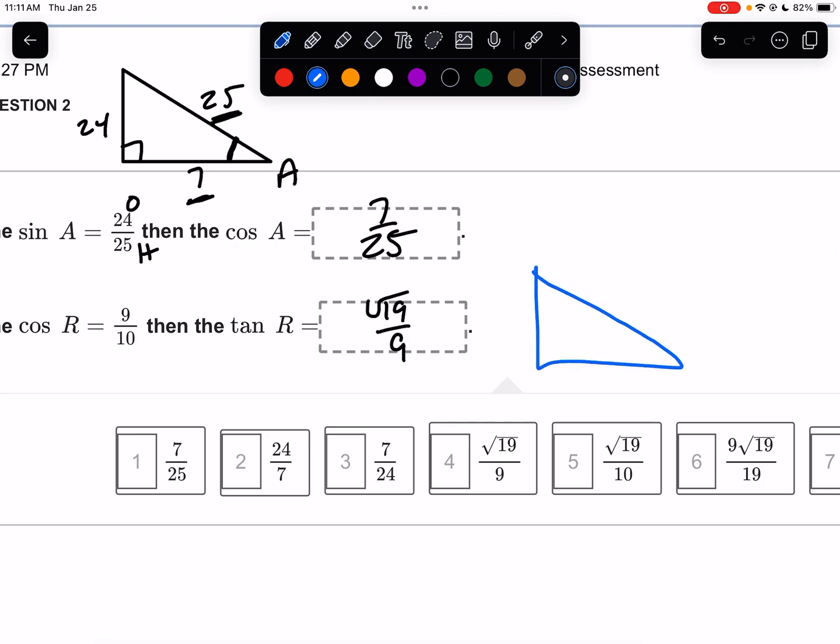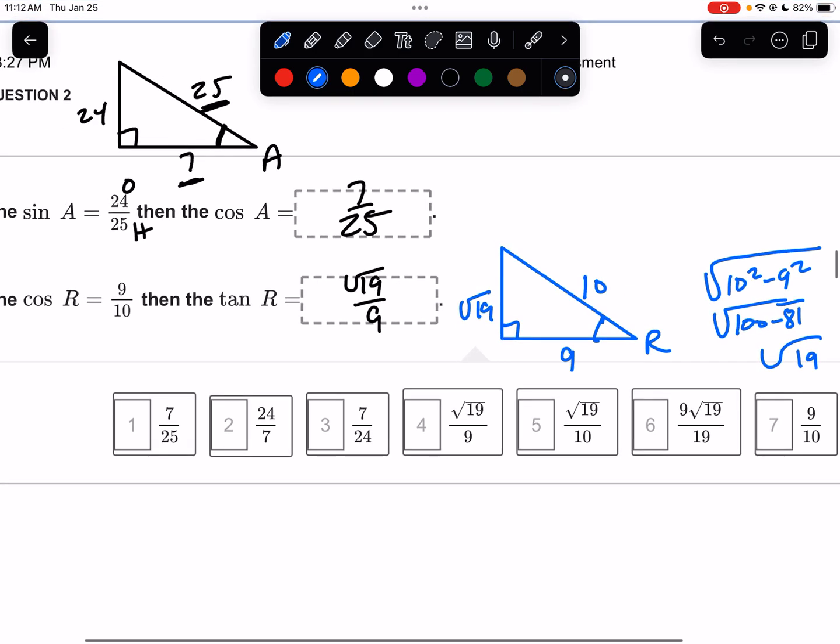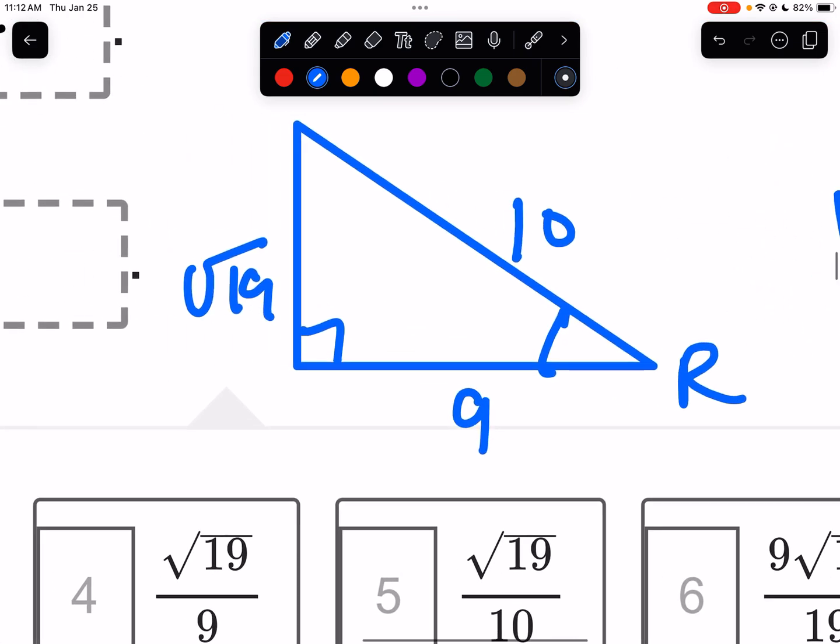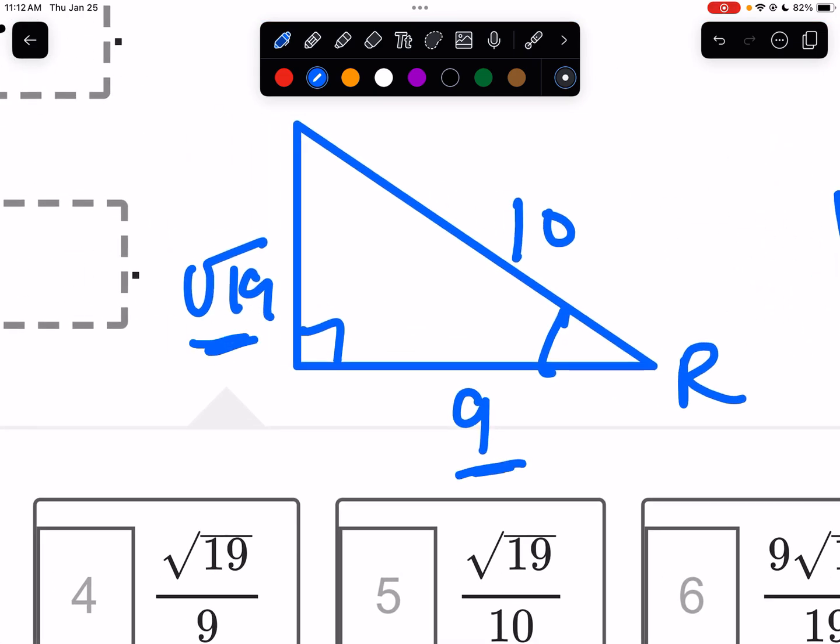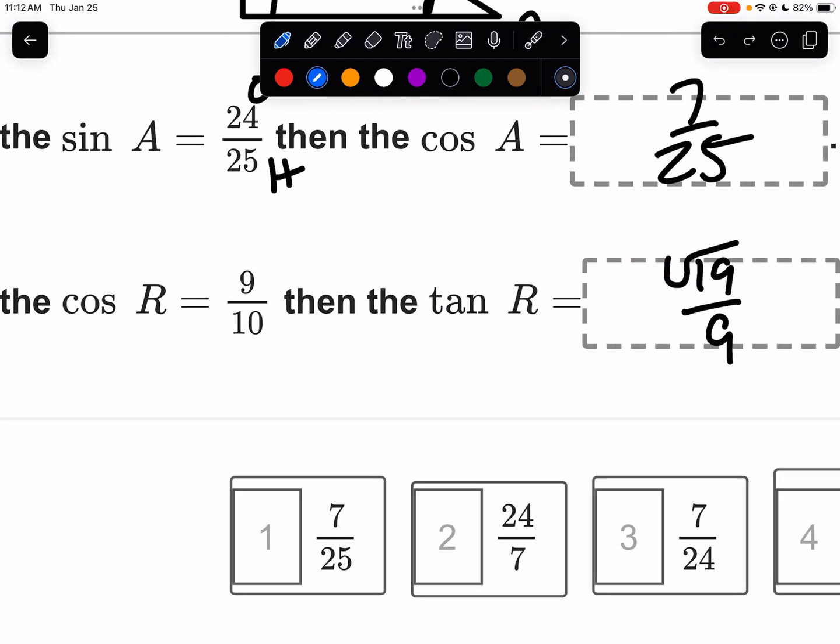For the next one, cosine of R. So let's draw another right triangle. Call one of the corners R. The cosine is 9 over 10. Cosine is adjacent over hypotenuse. So I'm going to have to do some Pythagorean theorem. That would be the square root of 10 squared minus 9 squared. That's 100 minus 81. That's the square root of 19. So what is the tangent of angle R? The tangent of angle R would be opposite over adjacent, which is root 19 over 9. So these are instructions, right? That's opposite. Nope. That's adjacent over hypotenuse. Cosine has to be adjacent over hypotenuse. These are instructions on how to make a right triangle.